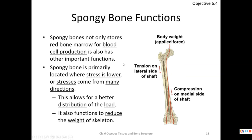Spongy bone not only stores bone marrow and fat, but also acts to reduce stress — it distributes and dissipates forces. On the head of the humerus, body weight is concentrated on one spot, but spongy bone distributes that load. It also allows our bones to be lighter than they would be if they were entirely solid compact bone.